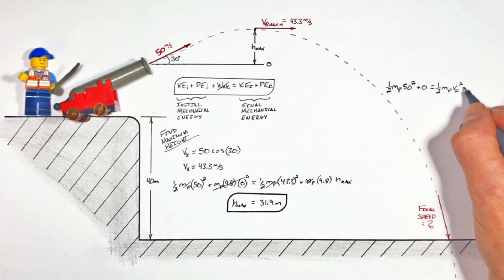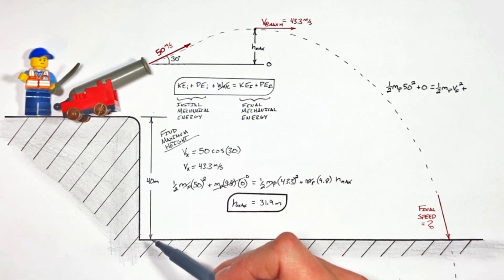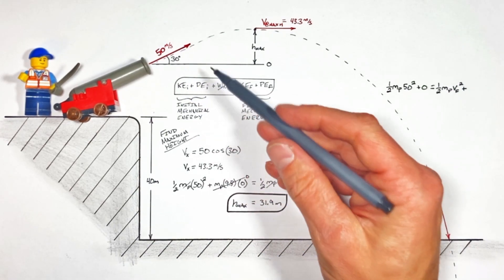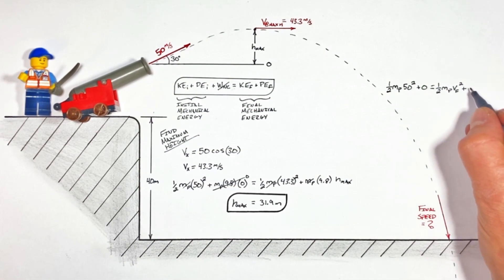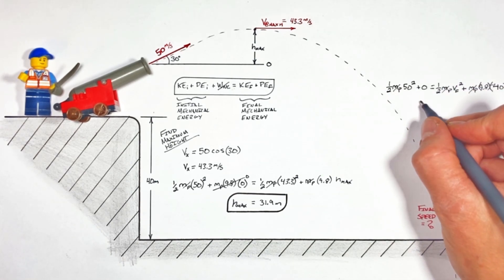In this case, because the projectile is finishing 40 meters below where it started, we're going to say the final height of the projectile is negative. Solving for the final velocity, we find the cannonball is going to be traveling 57.3 meters per second when it lands.